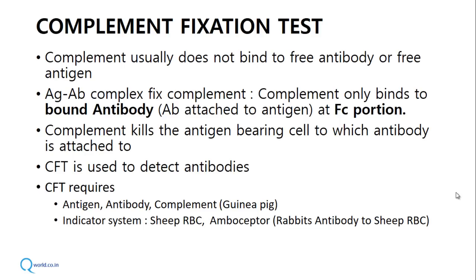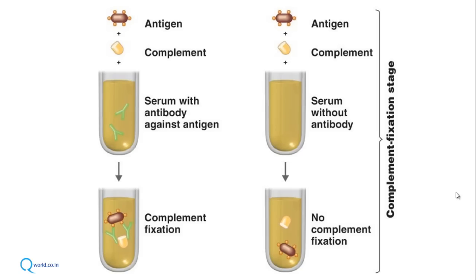We also need an indicator system to determine whether fixation has happened or not. For this we use sheep red blood cells along with amboceptor. Amboceptor is rabbit's antibody against the sheep RBCs that we are using. We will now understand this with the help of a diagram.